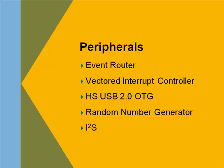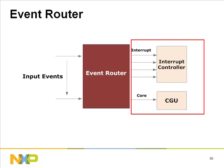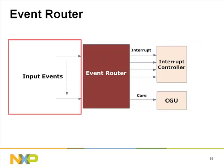The event router extends the interrupt capability of the system by offering a flexible and versatile way of generating interrupts. Combined with the wake-up functionality of the CGU, it offers a way to wake up the system from suspend mode. The event router has four interrupt outputs connected to the interrupt controller and one wake-up output connected to the CGU. Output signals are activated when an event such as a rising edge is detected on one of the input signals.